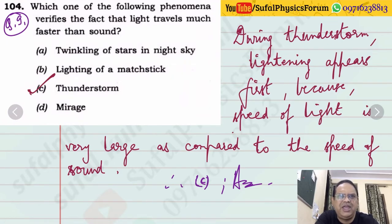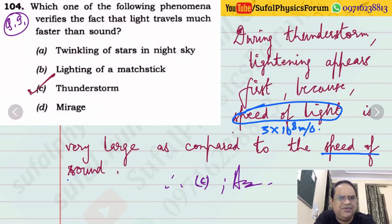Question number 9: Which phenomenon verifies that light travels much faster than sound? Yes, of course, thunderstorm is the right option because lightning appears first, as the speed of light is very large compared to the speed of sound. Speed of light is 3 into 10 raised to 8 meter per second, whereas speed of sound is approximately 332.5 meter per second. In thunderstorm, this can be observed. So right option is C.